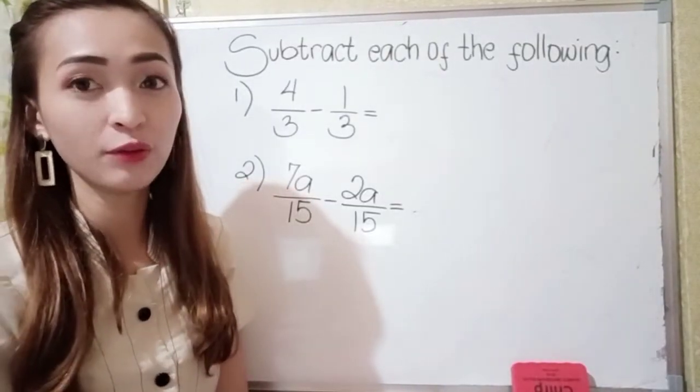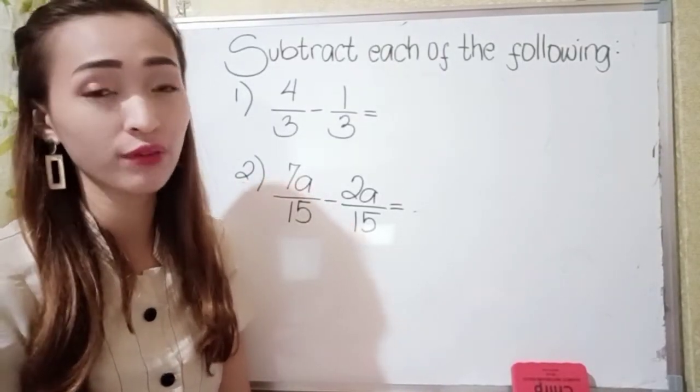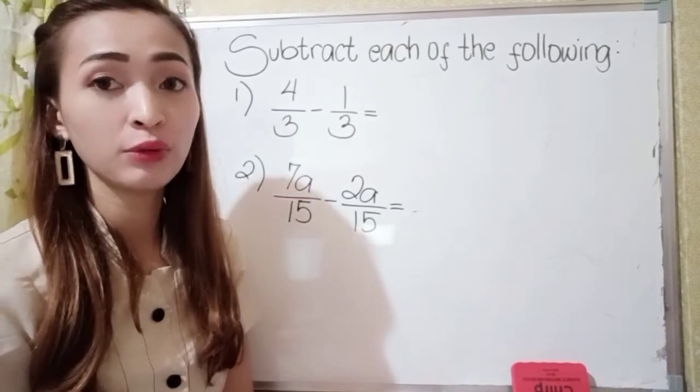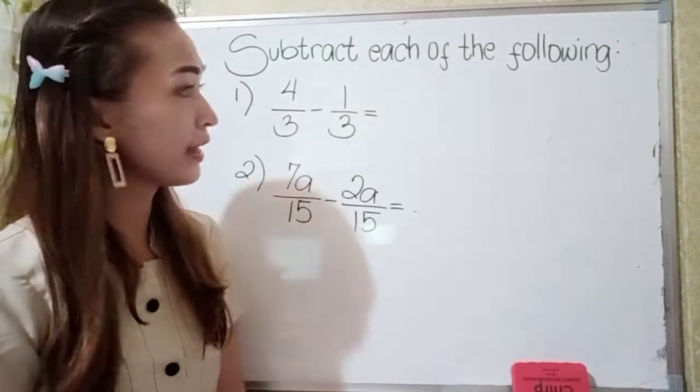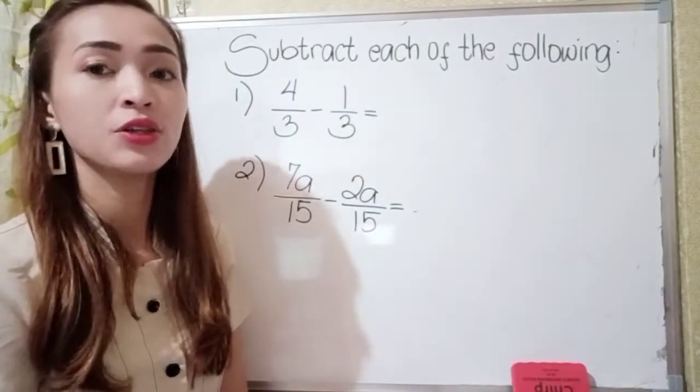Alright, so for example, we have here subtract each of the following. So for number one, we have 4 over 3 minus 1 third. So again, they have the same denominator.